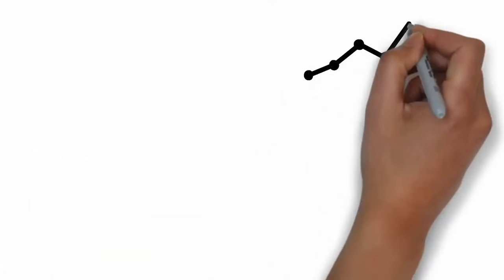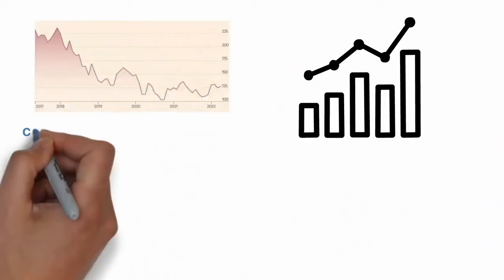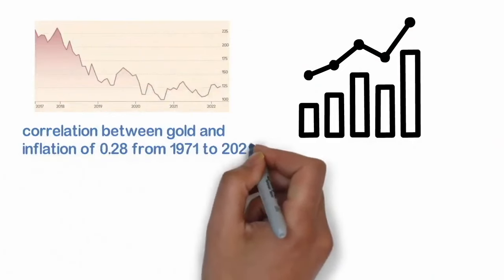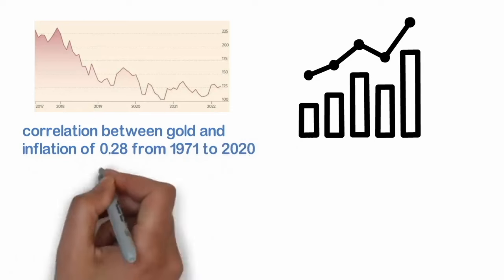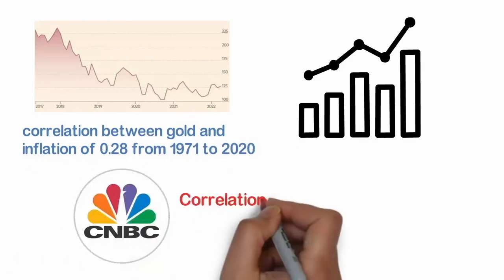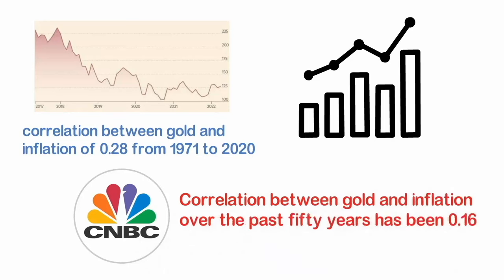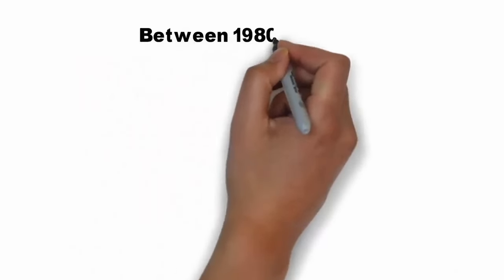First, let's talk about inflation. Data from Investor Chronicle shows a correlation between gold and inflation of 0.28 from 1971 to 2020. And according to CNBC, the correlation between gold and inflation over the past 50 years has been 0.16.